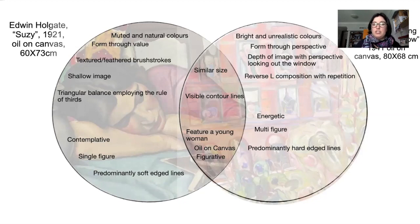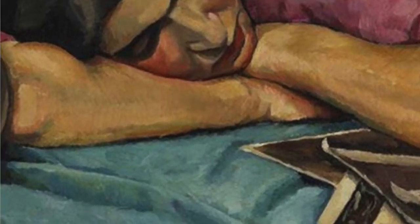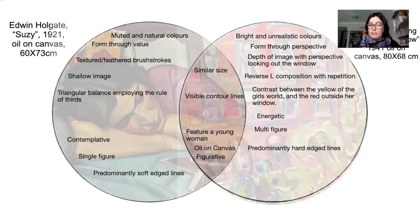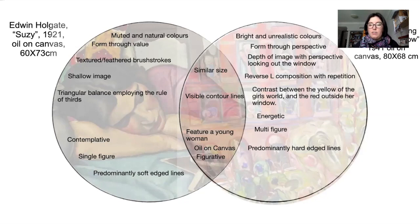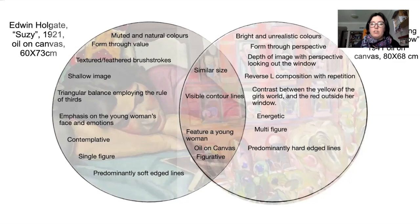Holgate's piece also uses very textured and feathered brush strokes, as opposed to McCloy's piece which doesn't have that kind of brush stroke effect. McCloy's piece has a very contrasting use of colors in the girl's world — because of her hair and the color of the windowsill, her world is all yellow, whereas everything outside has bright reds — so you can imagine this distinction between her world and the rest of the world. There's a real emphasis on the young woman's face and emotions in Holgate's piece, whereas in McCloy's piece we can't actually focus on anyone's faces — they're unclear.